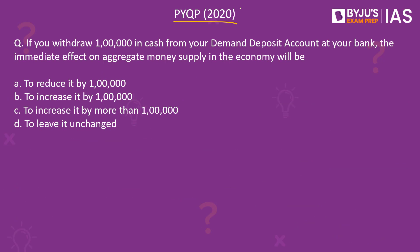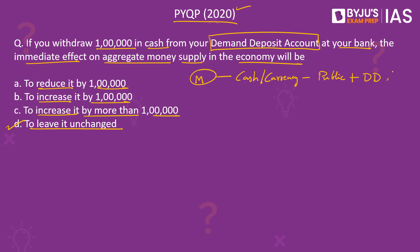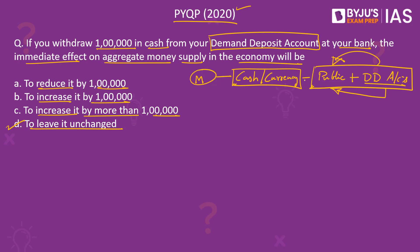Now let's look at a previous year's question from the 2020 prelims paper. If you withdraw 1 lakh rupees in cash from your demand deposit account at your bank, the immediate effect on aggregate money supply in the economy will be: to reduce it by 1 lakh, to increase it by 1 lakh, to increase it by more than 1 lakh, or to leave it unchanged. The correct answer is option D. Aggregate money supply refers to the total cash or currency available with the public and the total cash present in demand deposit accounts. When you withdraw from your demand deposit account, the cash is just moving from the demand deposit account into the direct hands of the public, but this does not change aggregate money supply. Hence the right answer is option D — to leave it unchanged.